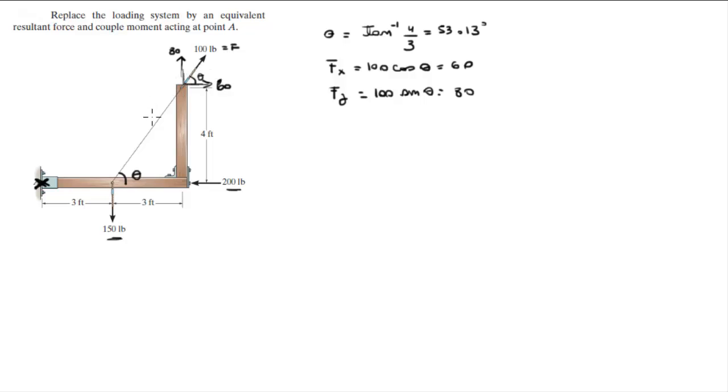Now that we have all the X and Y components, then we can calculate the moments. So the sum of the moments at A: first we got the moment created by this 150 pound force, which is 150 times the length of the lever arm, which is 3. Let's say going clockwise is positive, so this turns the lever arm clockwise, so it's positive.